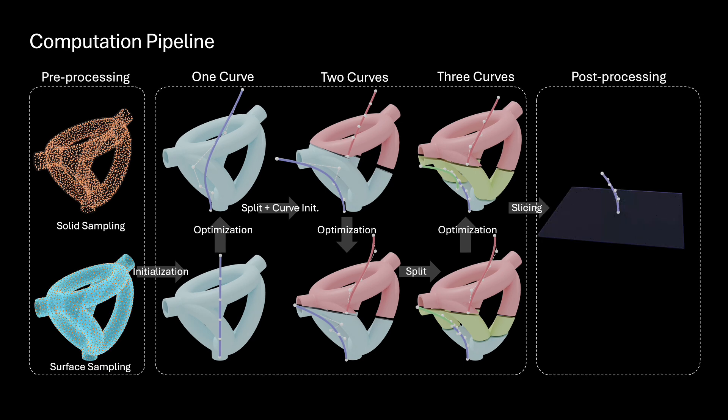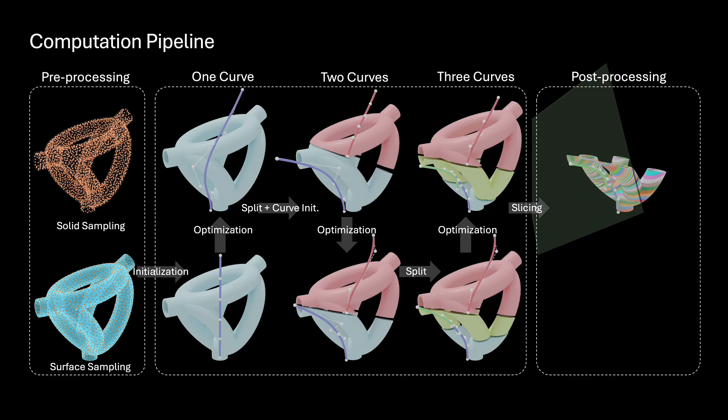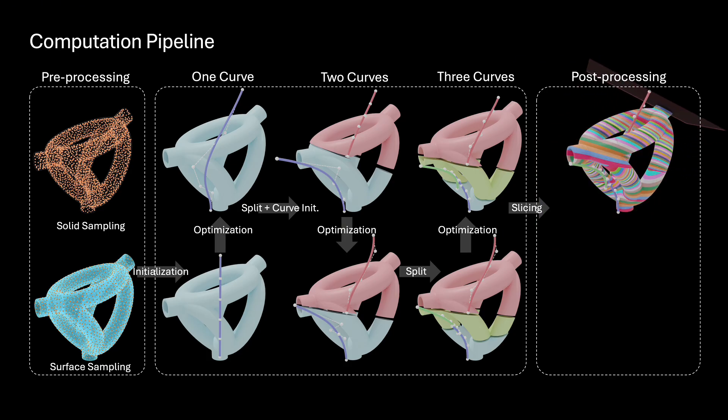The three optimized curves serve as the collision-free trajectories for DLP printing by sweeping the bottom of a resin tank.